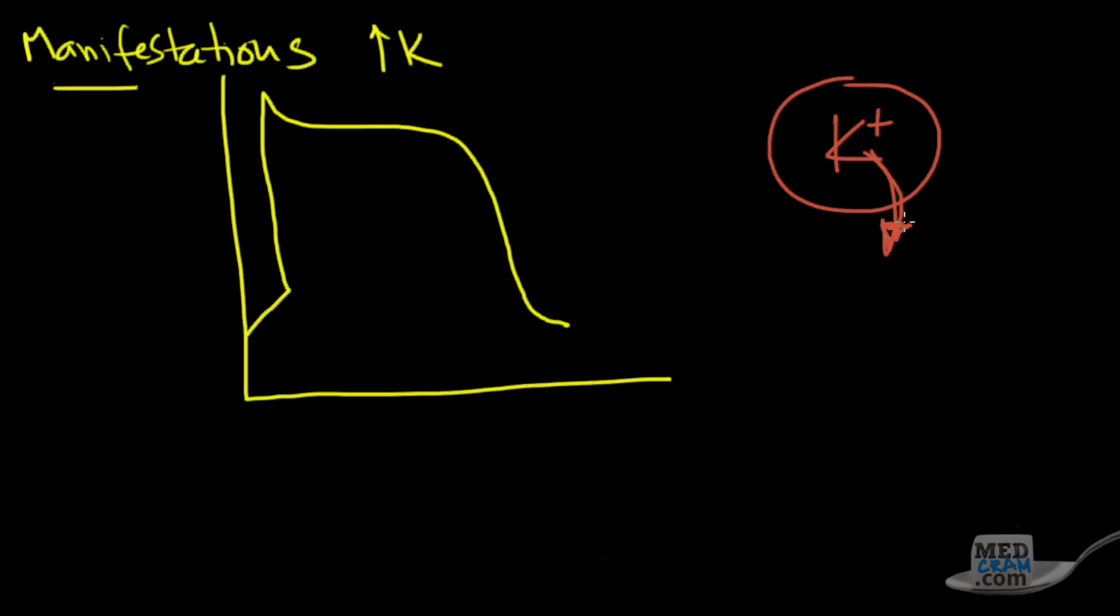And so what happens is you have a positive charge leaving the cell. What's that going to do? That's going to generally make the inside of your cell negative. And that's exactly what we see here. Down to close to negative 90 millivolts, you've got this negative.